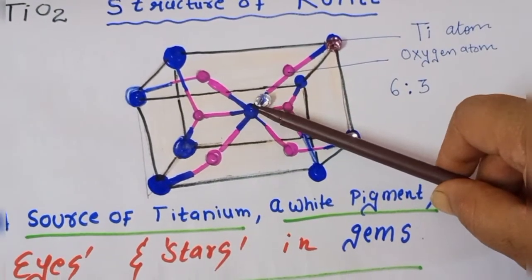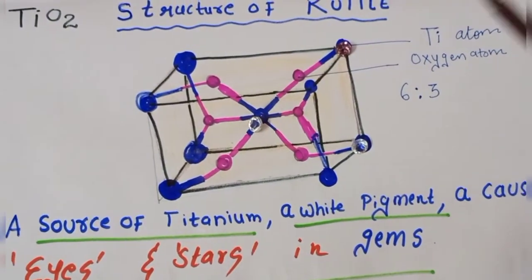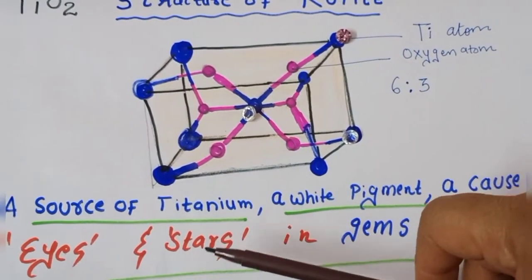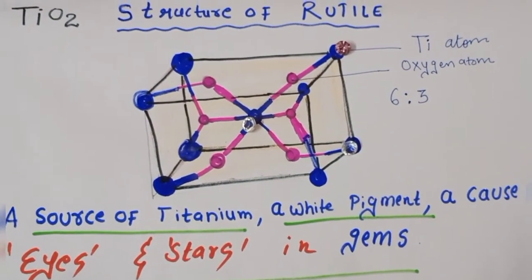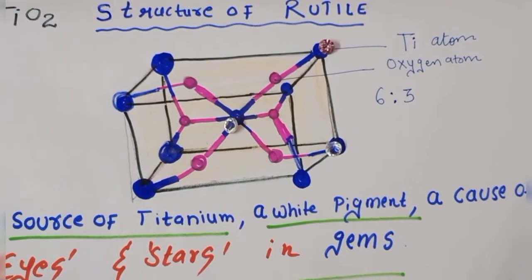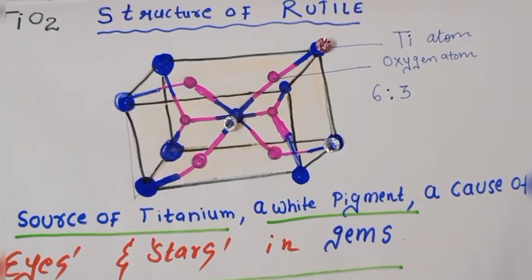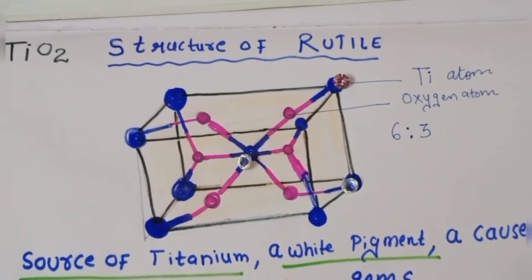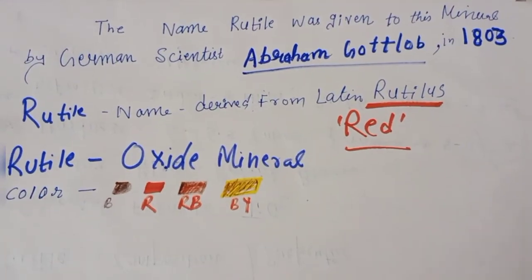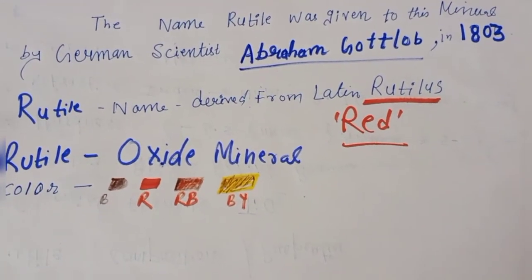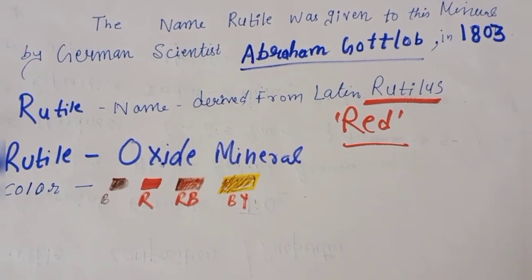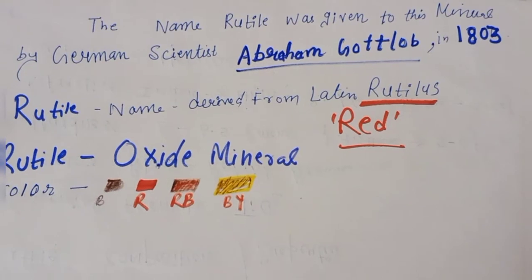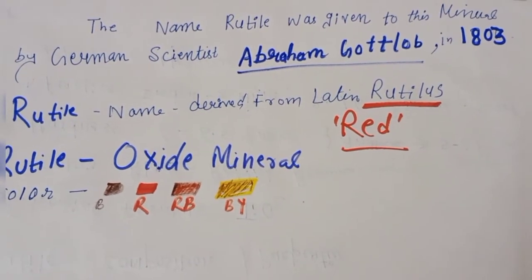Why is it said to cause eyes and stars in gems? When we look at gemstones, sometimes they are visible as eyes and stars. Now let us see the discovery of rutile before going into structural details.